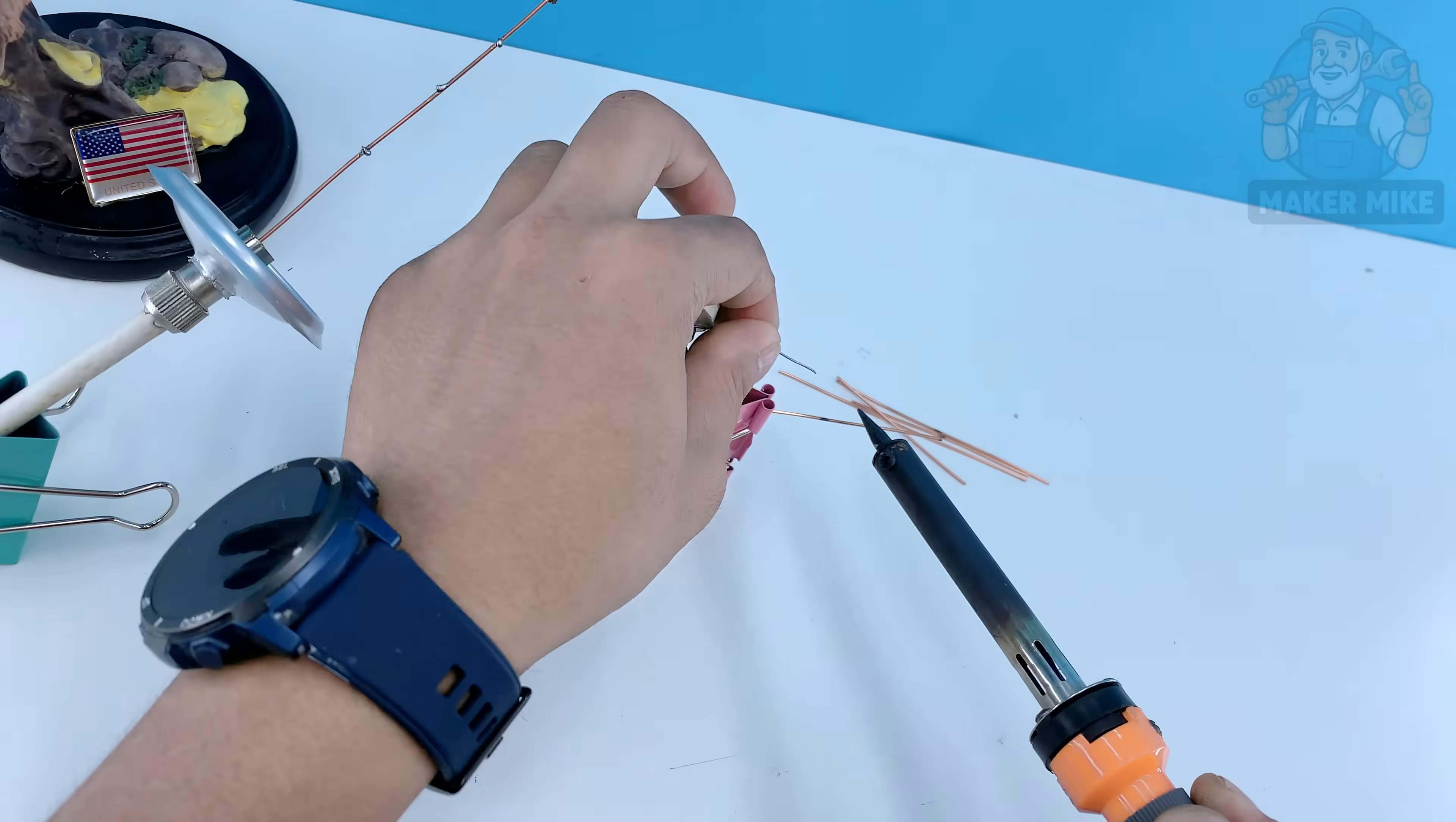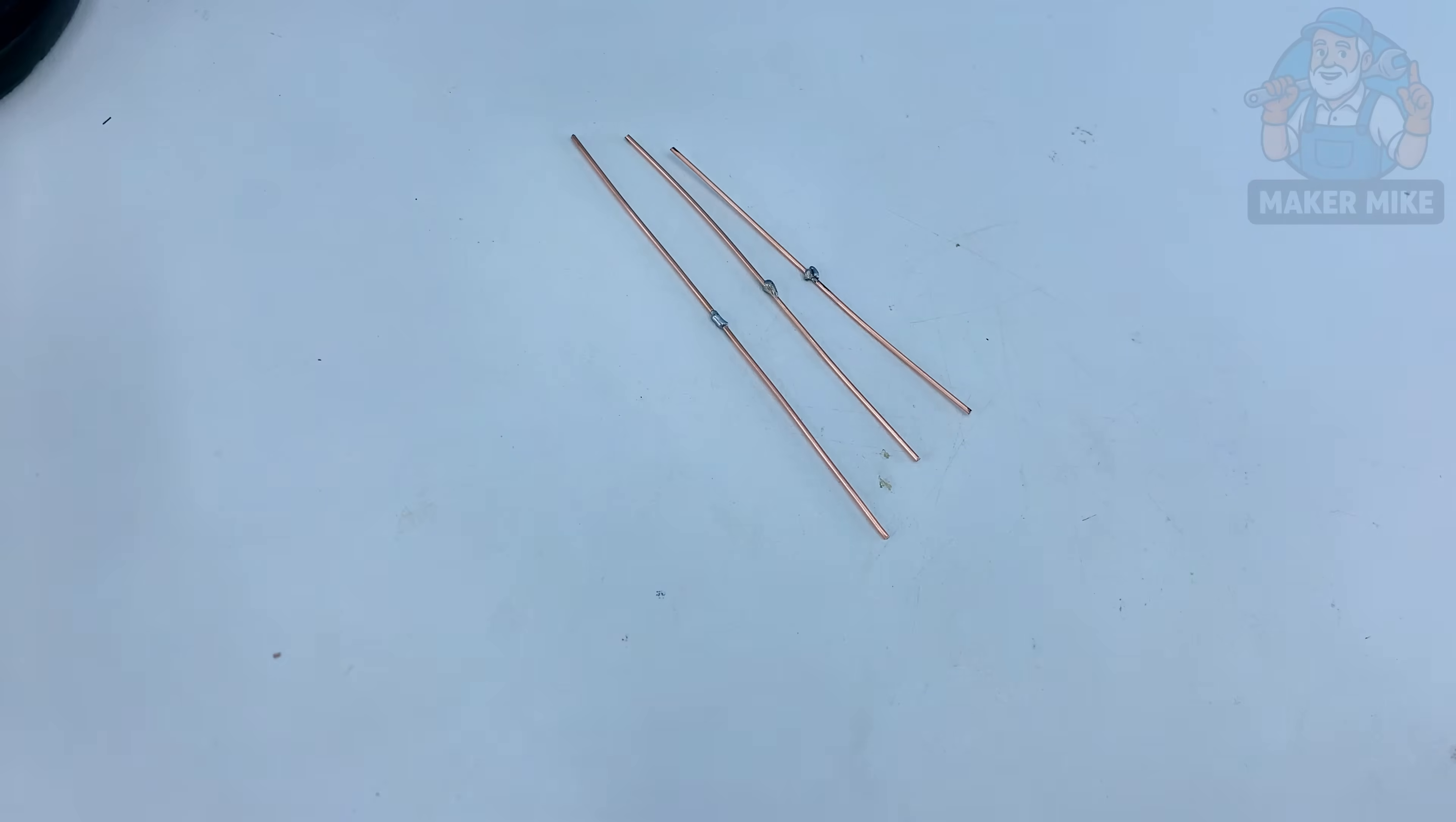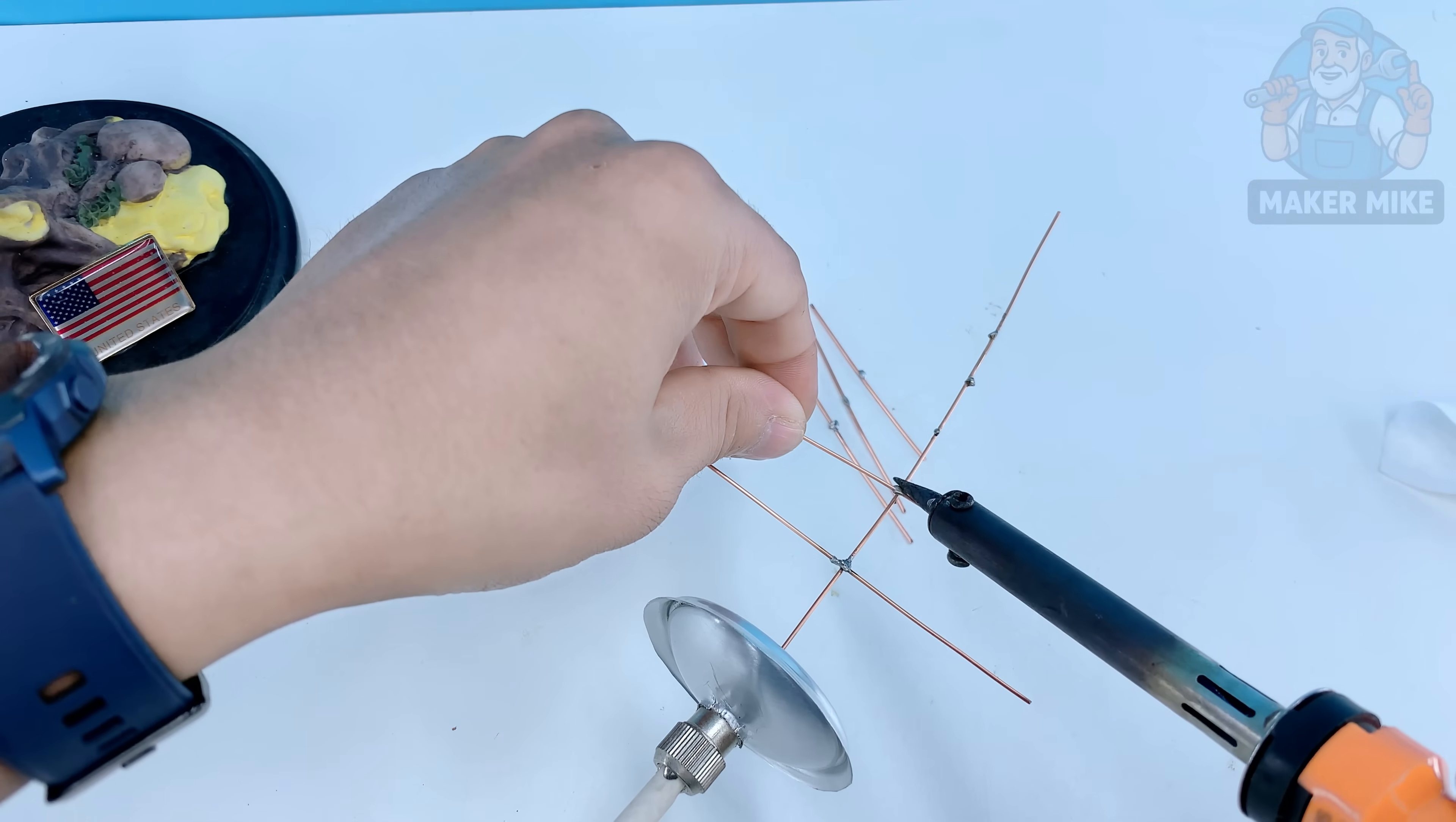Now comes the most important part, building the heart of your antenna. Take the five copper wires you prepared earlier and place them on your workbench from longest to shortest. Each one will connect to the main copper core of your coaxial cable, right at those center marks we made before. Start with the longest piece first. Hold it steady against the coax core and touch the soldering iron where the two meet.